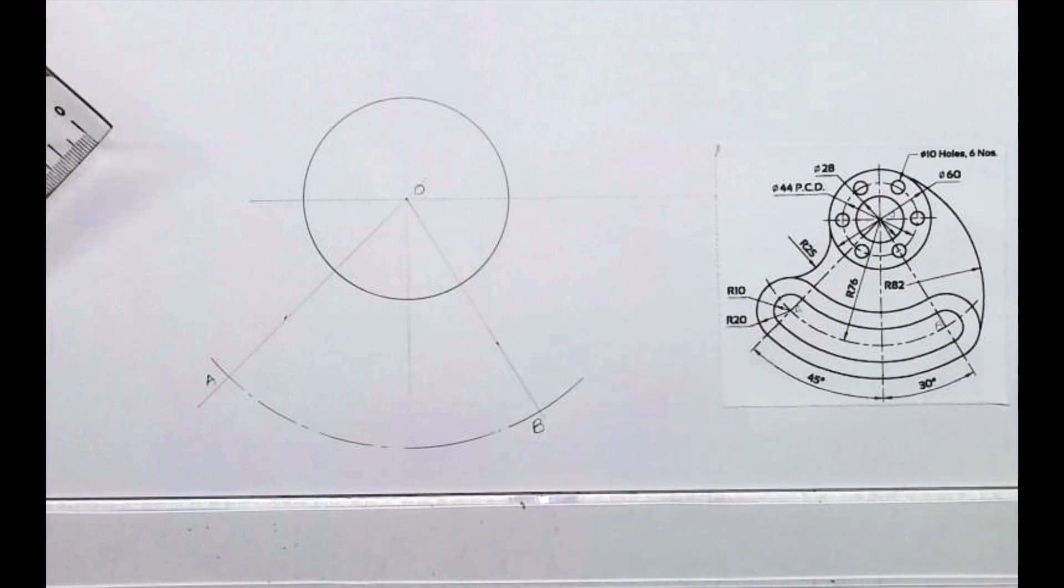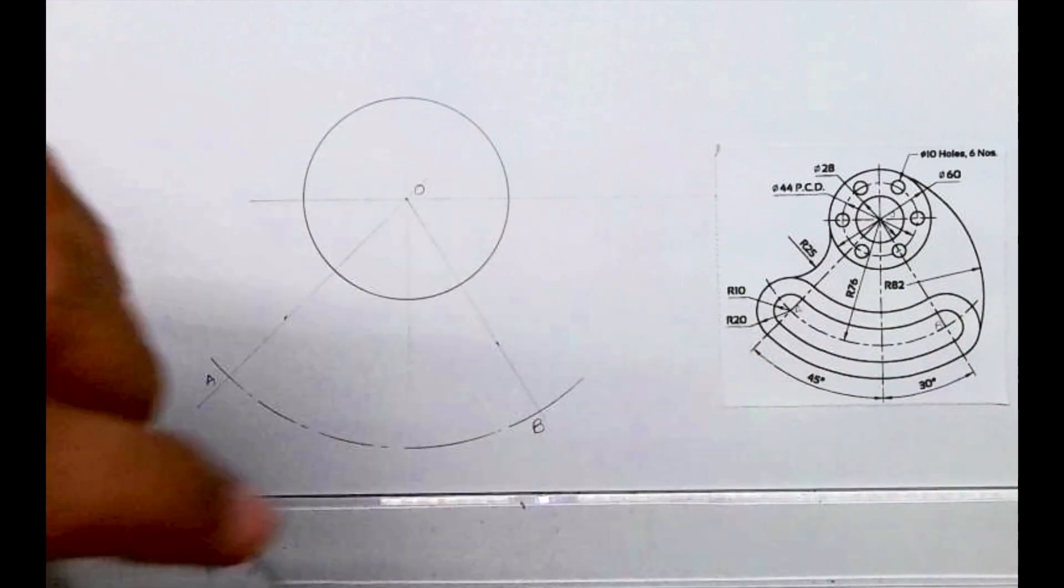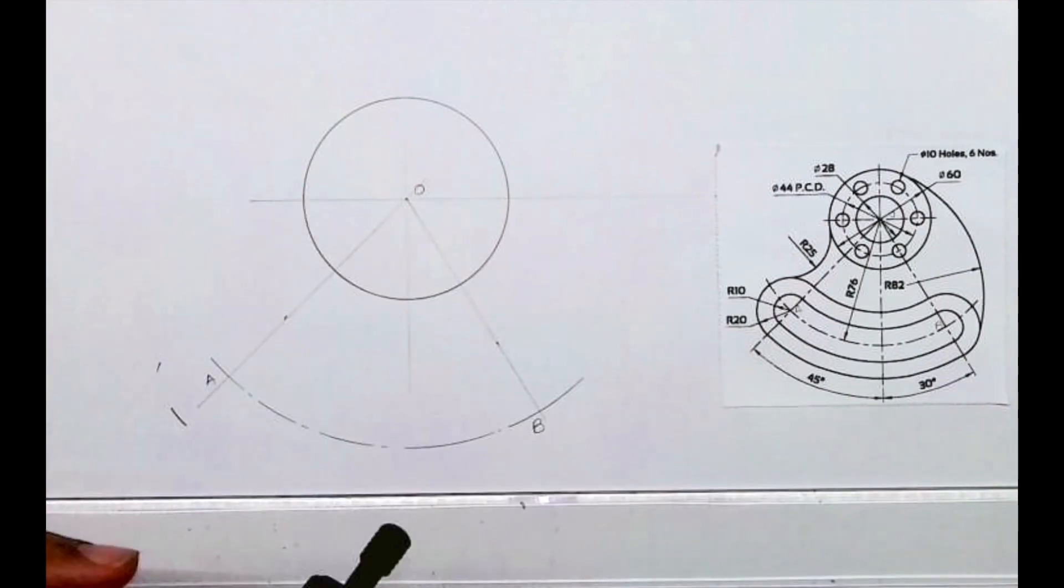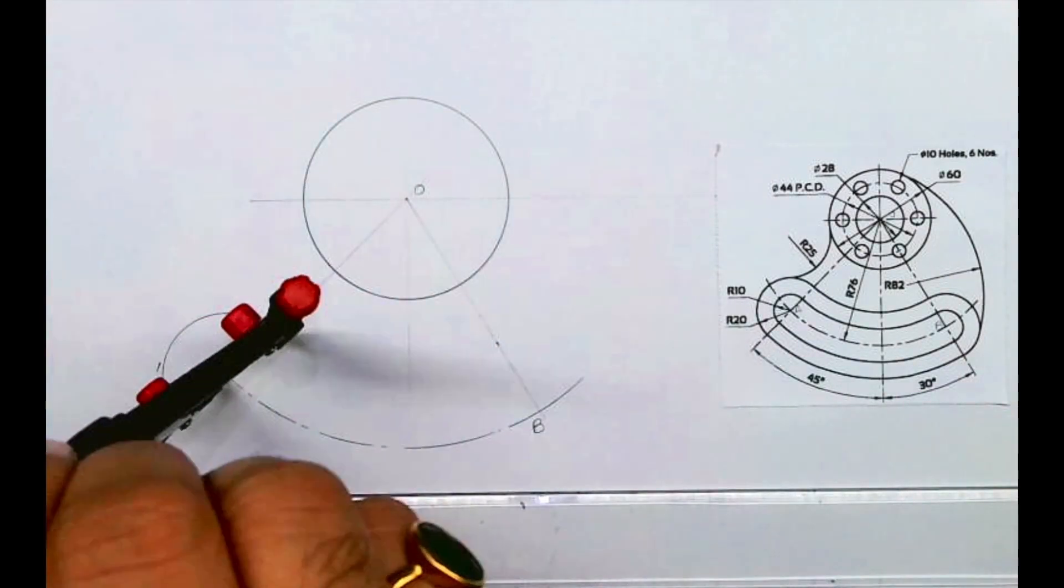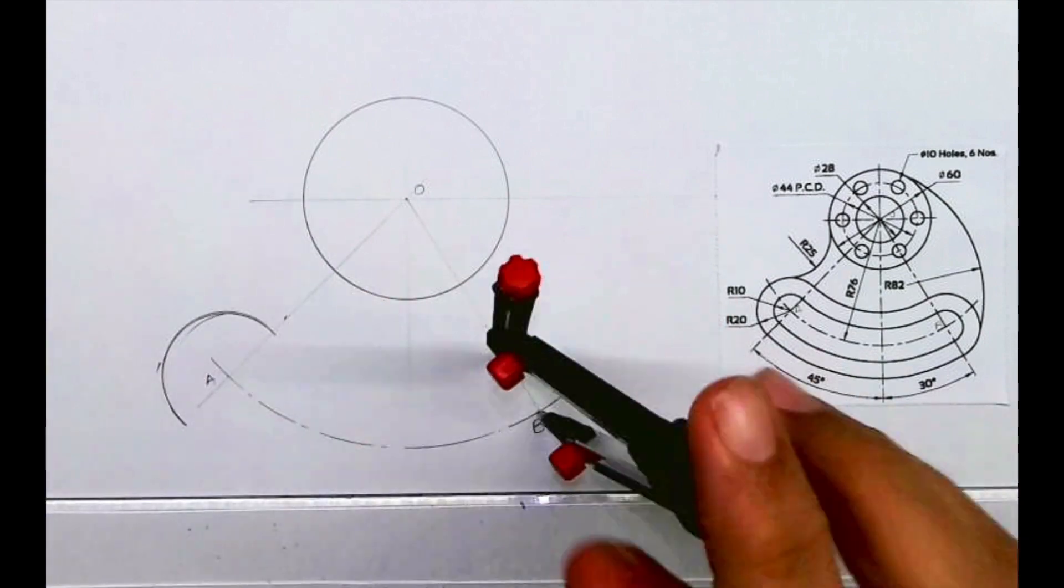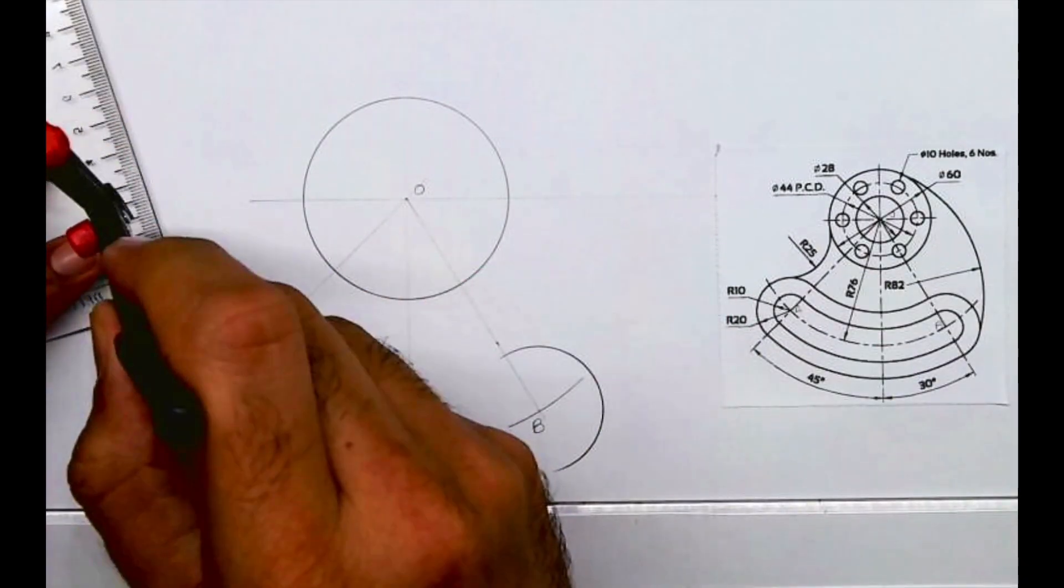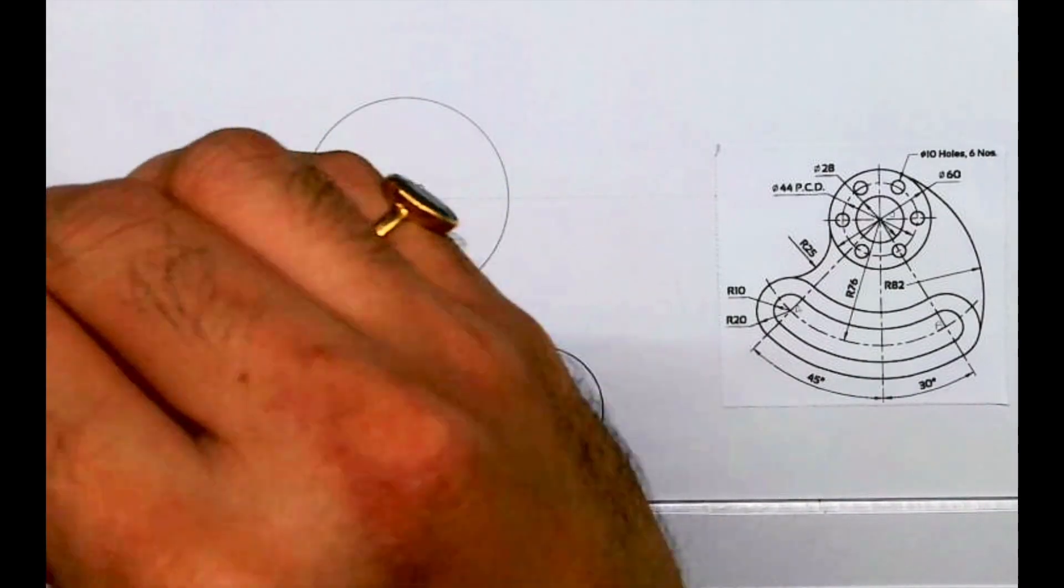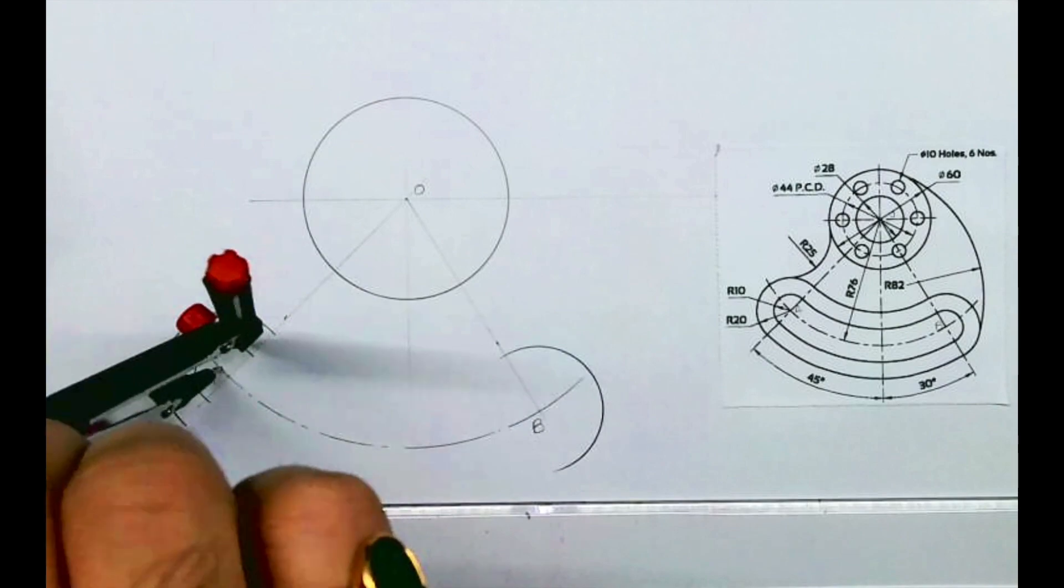So from A we will draw radius 20 and 10, and from B also we'll draw radius 20 and 10. So from A you draw 20 as well as 10, you draw half circle like this.